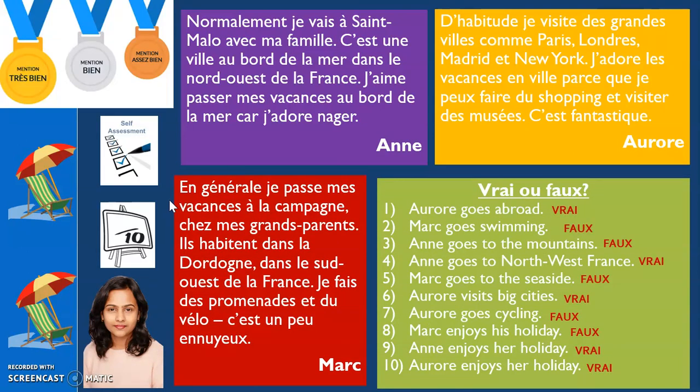Here you go, Year 5 — you have all the answers for vrai ou faux. Mark yourself out of ten. Très bien if you got seven, eight, nine or ten. Bien if you got four, five or six. Assez bien if you got one, two or three. Assez bien is grow level, bien is flourish level, and très bien is succeed level. Hope you enjoyed today's lesson and learned as much as possible. Au revoir — and remember to post your task on Teams.